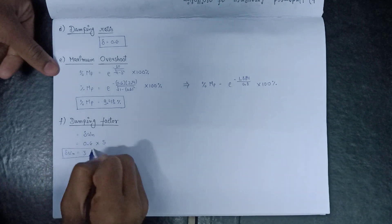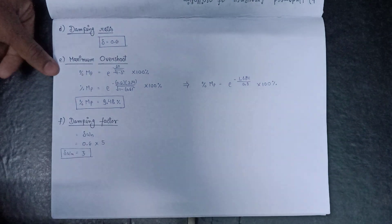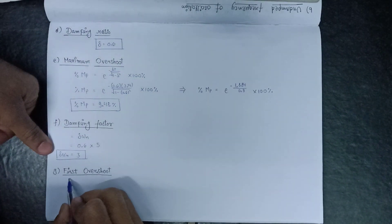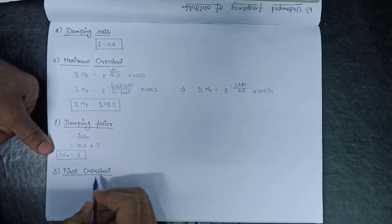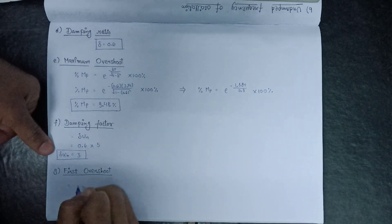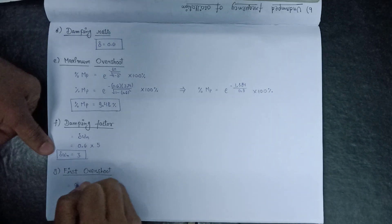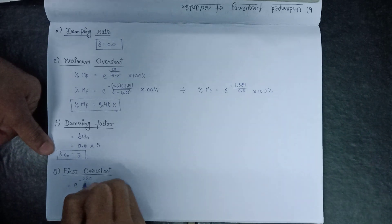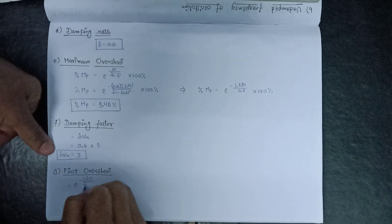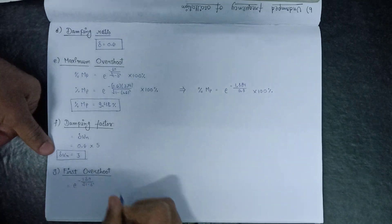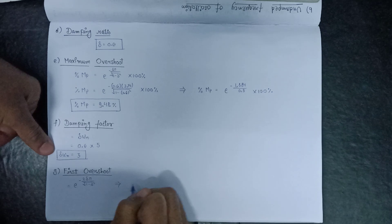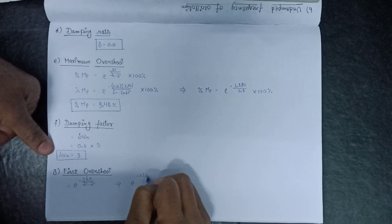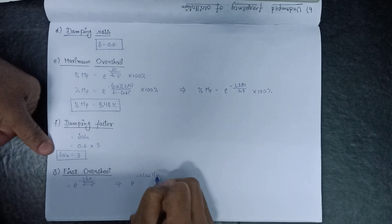This is our damping factor. Moving on to the first overshoot, which is given by: e^(−2δπ / √(1−δ²)). Substituting, we get: e^(−2 × 0.6 × 3.14 / √(1−0.6²)).